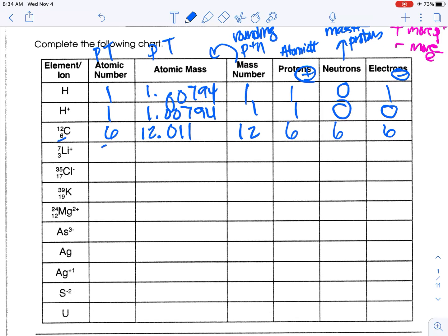The next one is lithium. Atomic number is 3. Atomic mass of lithium is 6.941. If you round that to a whole number, you get 7. Protons is 3. 7 minus 3 is 4 neutrons. For electrons, notice we have a positive 1 charge, which means we have one more proton than electrons — we've lost an electron. We would normally have 3, but we've lost one, so there are 2 electrons.